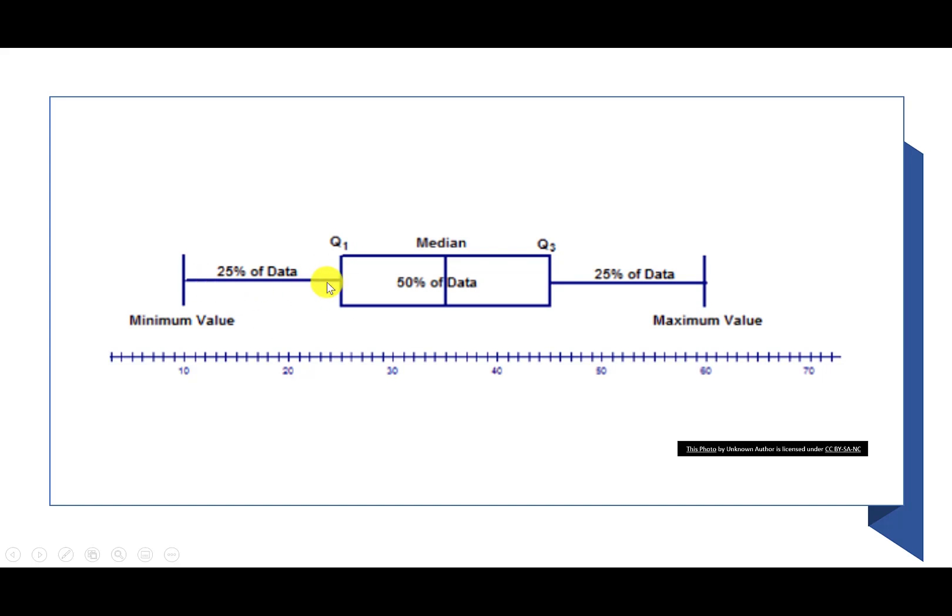So 25% is below the first quartile. 50% is between quartile one and quartile three. And then another 25% is after quartile three, so above it. We call this amount from quartile one to quartile three, we call it IQR. That's the inner quartile range. So it tells me where 50% of the data is at.